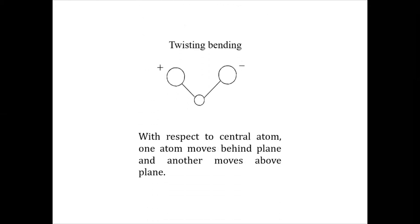Next, twisting bending. You may have seen a rope with some twist in it. Similarly, with respect to the central atom, one atom moves behind the plane and another atom moves above the plane simultaneously. It looks like twisting. This type of bending vibration is known as twisting bending vibration.